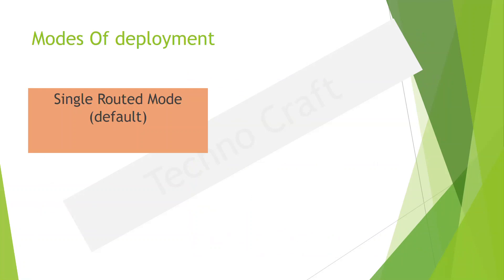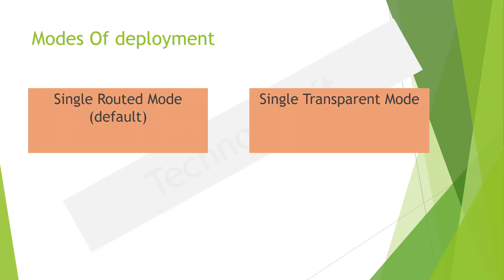Now let's look at the modes of deployment. Our ASA devices default to what is called routed mode in single mode — single routed mode. They operate as a single device at layer 3 of the OSI model, with a different subnet on each interface. They maintain a routing table and can participate in routing protocols like OSPF, EIGRP, static routes, and so on, acting as a layer 3 hop. An alternative to that would be transparent mode.